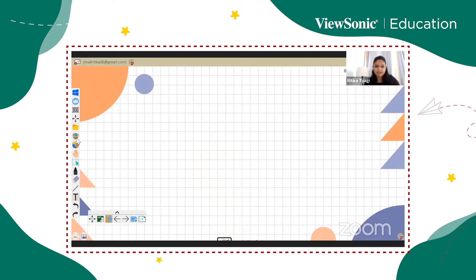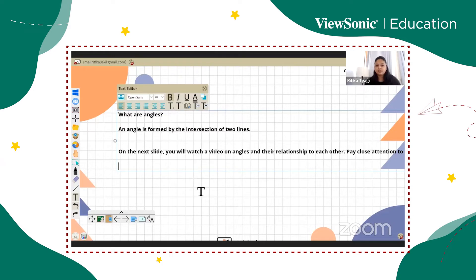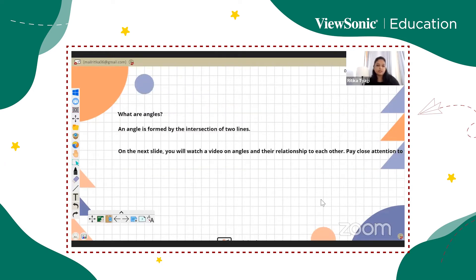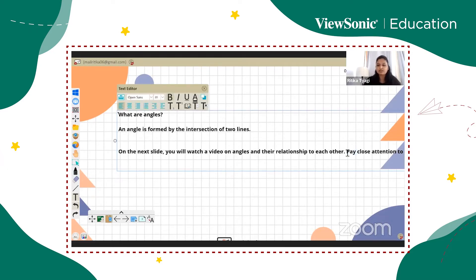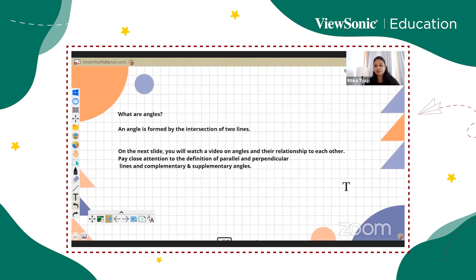Teachers got a fair idea of how to use polls. On the next slide I start with the topic — so I want to tell students what angles are, the basic definition. I can make the text bold, then copy and paste the definition I've already prepared. I've given them an overview: 'On the next slide you will watch a video on angles and their relationship to each other — pay close attention to the definition of parallel and perpendicular lines and complementary and supplementary angles.' Students get prepared that a video is coming on the next slide.